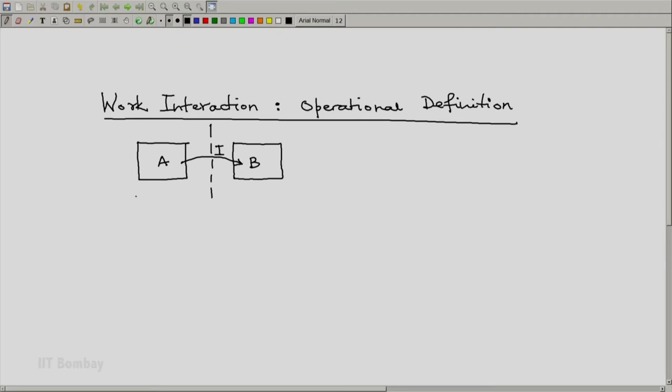Because of this interaction, the state of system A will change, and let the initial state of A be A1 and let its final state be A2. Because of this interaction, the state of system B will also change. Let B1 be its initial state and B2 be its final state.